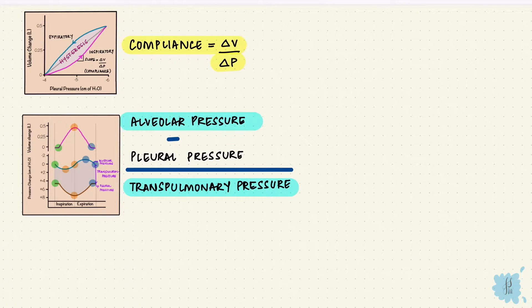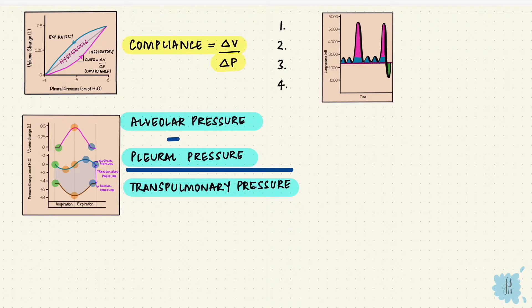There are three pressures but there are four volumes and four capacities. The volumes are the inspiratory reserve volume, the tidal volume, the expiratory reserve volume, and the residual volume.